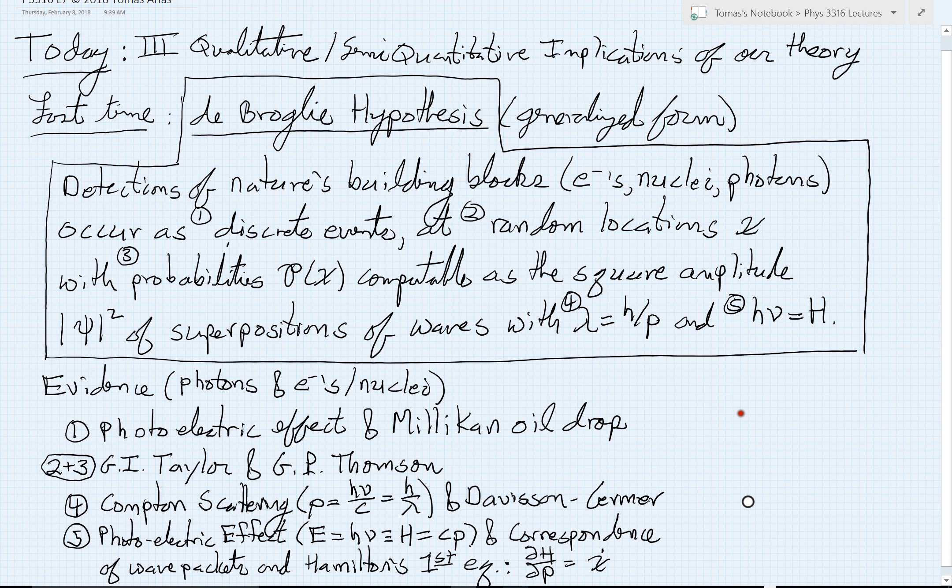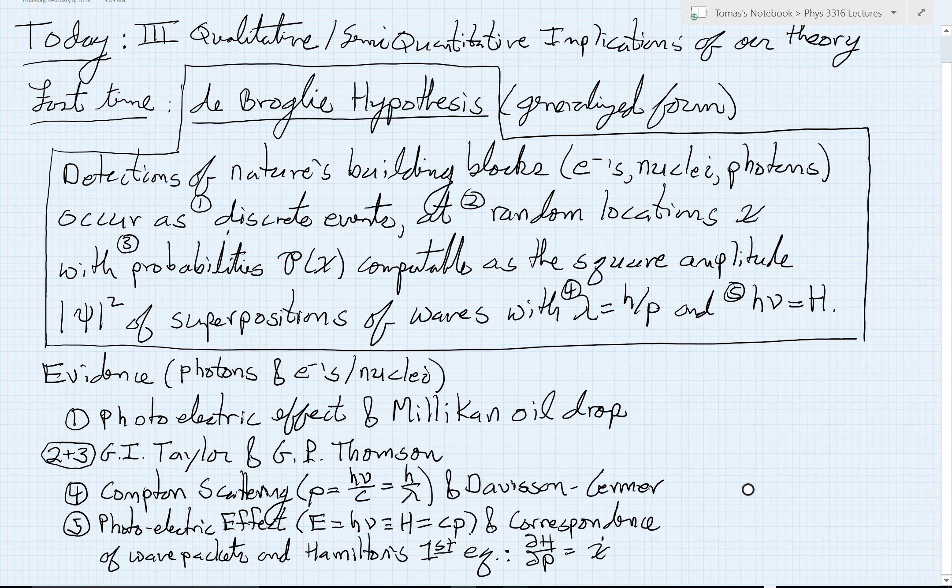Now our theory is based on this de Broglie hypothesis that we had described last time, and it's really a generalized form of what de Broglie proposed, but it contains really all of the essence of what he had suggested. But we've just tied it in a particular way to the experiments that we've been reviewing.